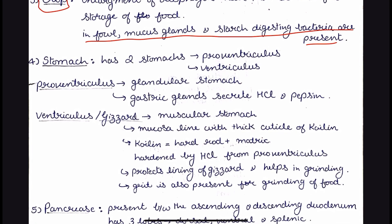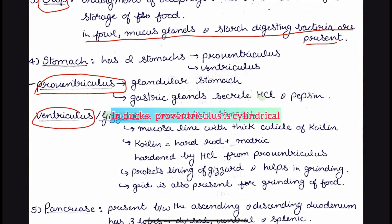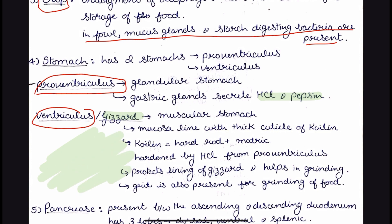The stomach has two parts: proventriculus and ventriculus. The ventriculus is also called the gizzard and it is the muscular stomach. The proventriculus is the glandular or true stomach, and it has gastric glands which secrete hydrochloric acid and pepsin. The gizzard has a mucosa lined with a structure called coilin. Coilin consists of an amorphous matrix with coilin rod-like hard crystals. In the presence of HCl from the proventriculus, this coilin structure hardens and forms a protective lining on the mucosa of the gizzard, helping in grinding.